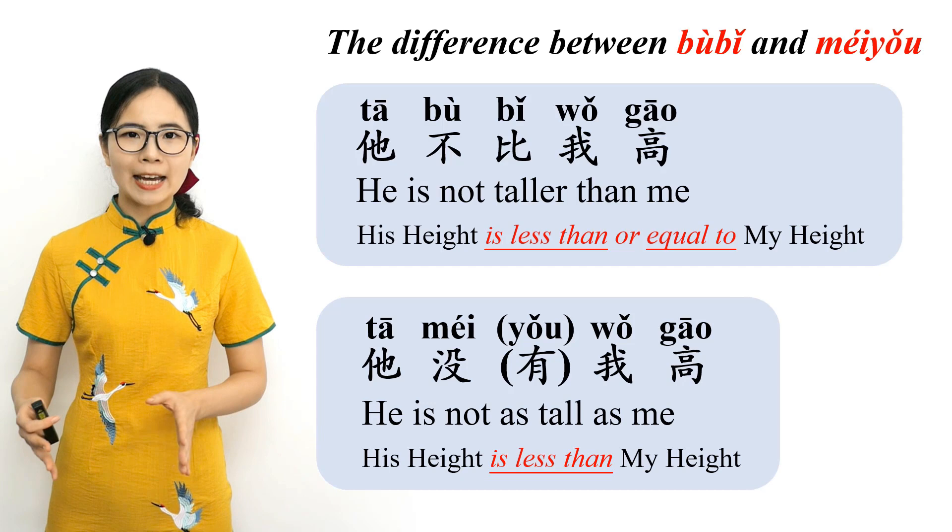OK, that's all for this lesson. In this lesson, we learned two different ways of doing negative comparisons in Chinese. I hope you have found this lesson useful. Did you enjoy this lesson? Please click like below and leave me a comment. If you are interested in my private Chinese lessons, please visit my website HarbinMandarin.com and send me a message. I will see you guys next time. 再见!